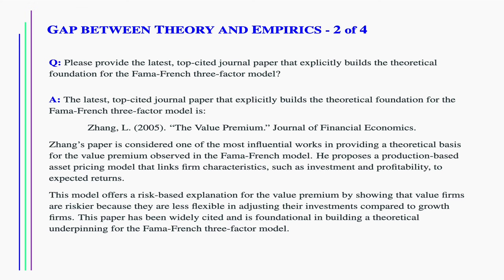Please provide the latest top-tier journal paper that explicitly builds the theoretical foundation for the Fama-French three-factor model. Zhang, 2005, 'The Value Premium,' Journal of Financial Economics. Zhang's paper is considered one of the most influential works in providing a theoretical basis for the value premium observed in the Fama-French model. He proposes a production-based asset pricing model that links firm characteristics, such as investment and profitability, to expected returns. This model offers a risk-based explanation for the value premium by showing that value firms are riskier because they are less flexible in adjusting their investments compared to growth firms.